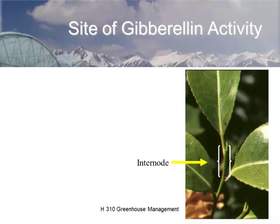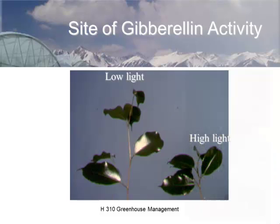The site of application of gibberellic acid is in the internode of rapidly expanding tissue. Here is a benjamin fig — the same plant grown under low light levels shows elongated internodes, while under high light levels the internodes are short. That's a typical response.